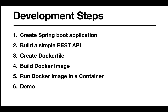Here are the development steps: first we create a Spring Boot application, next we build a simple REST API to test our Spring Boot application deployment in a Docker container. Then we create a Dockerfile — which contains a set of instructions or native Docker commands to build a Docker image. Once we build the Docker image, we run it in a Docker container, and then we'll see a working demo.